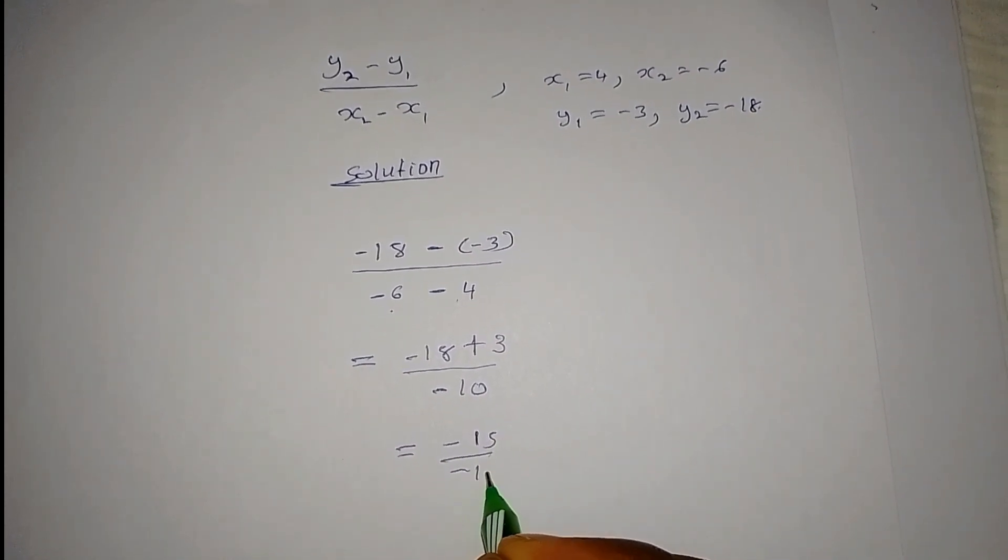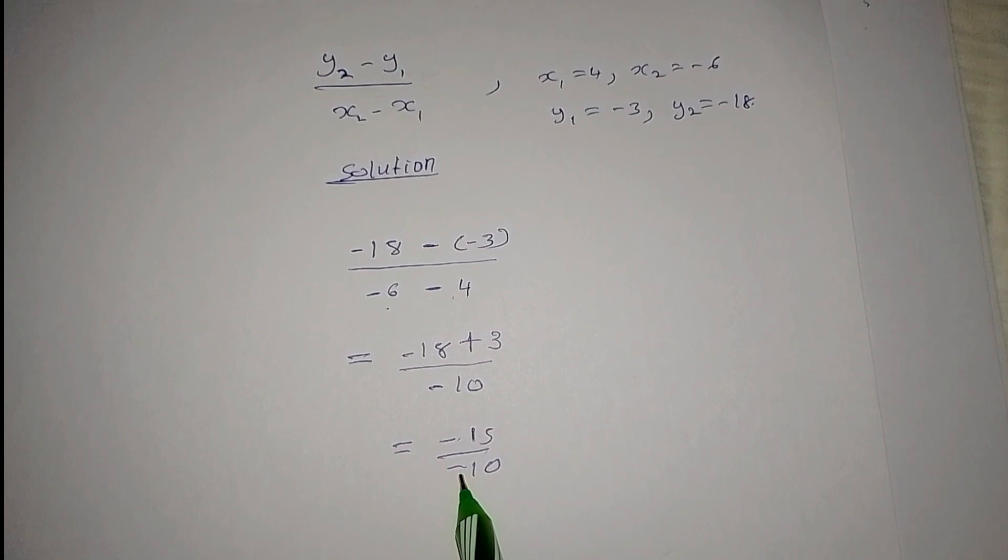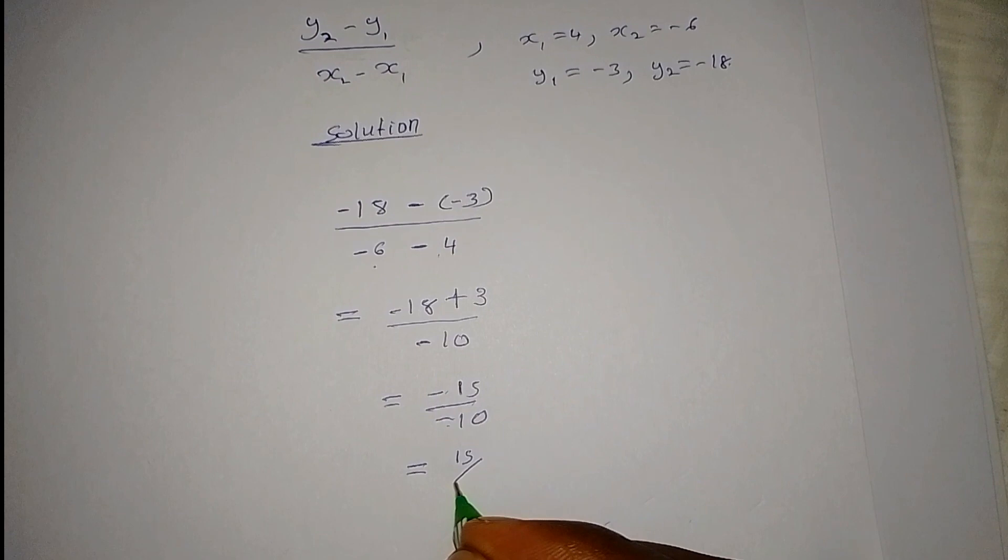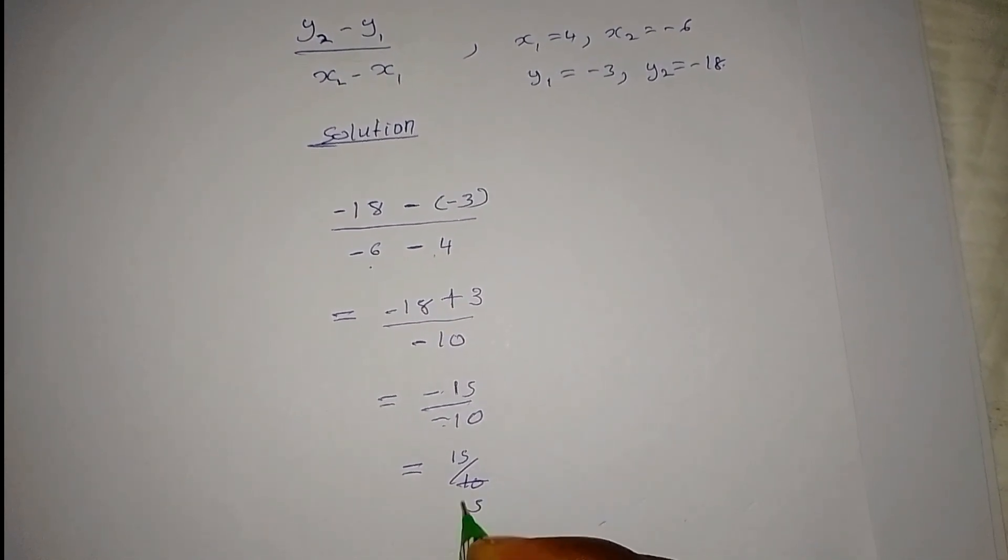divided by negative 10. A negative divided by a negative sign will always give a positive, so that is 15 out of 10, which simplifies to 3 out of 2.